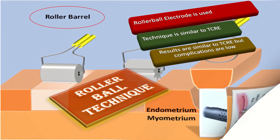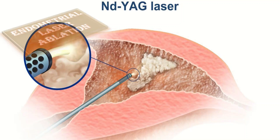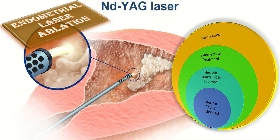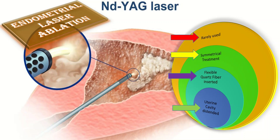In endometrial laser ablation, the uterine cavity is distended with normal saline. A 600 micrometer flexible quartz fiber is inserted to transmit Nd:YAG laser energy to the endometrium, and the entire endometrial cavity is symmetrically treated. It is rarely used nowadays due to costs, prolonged operation time, and safety concerns of using lasers in the operating theatre.